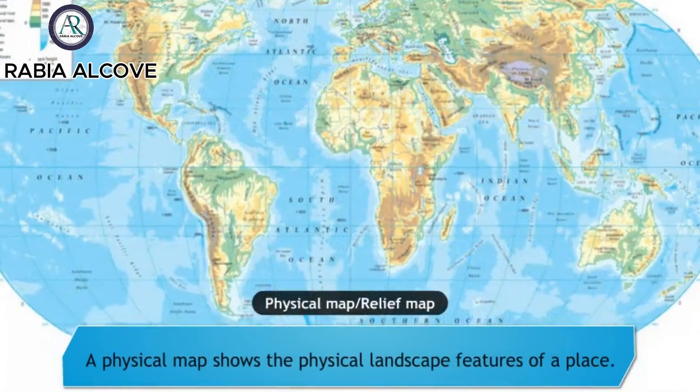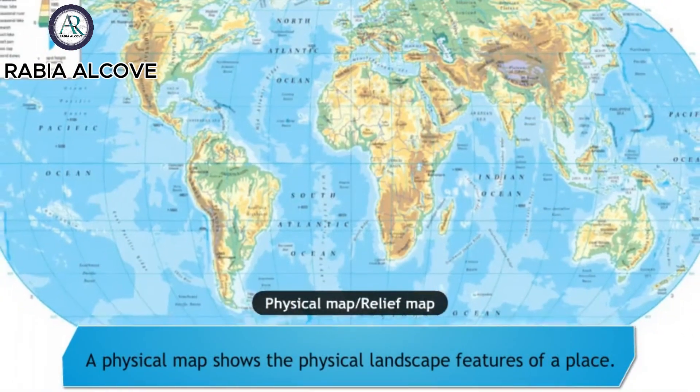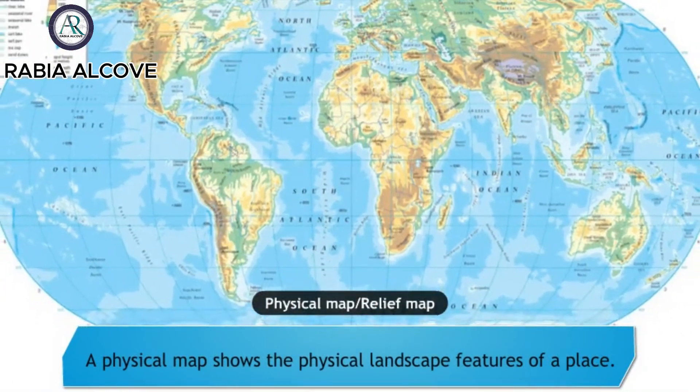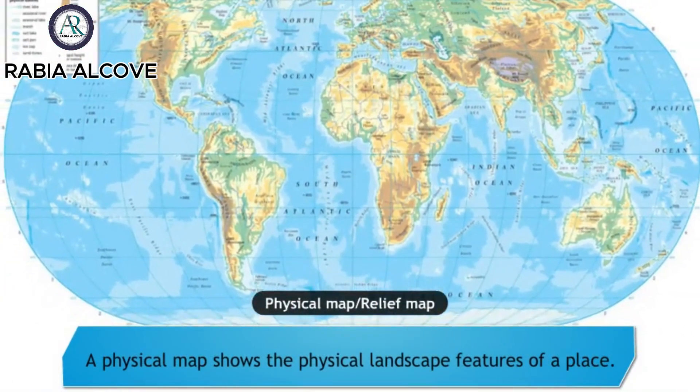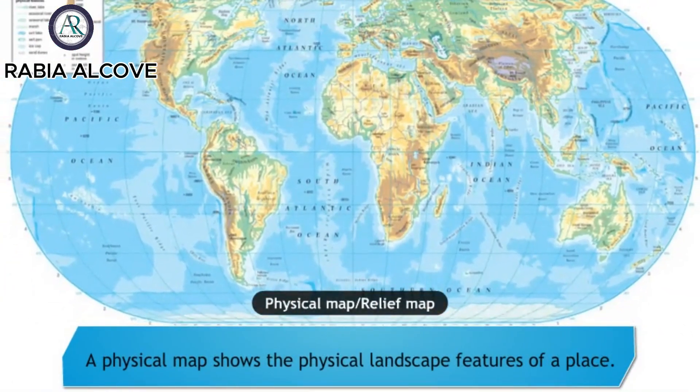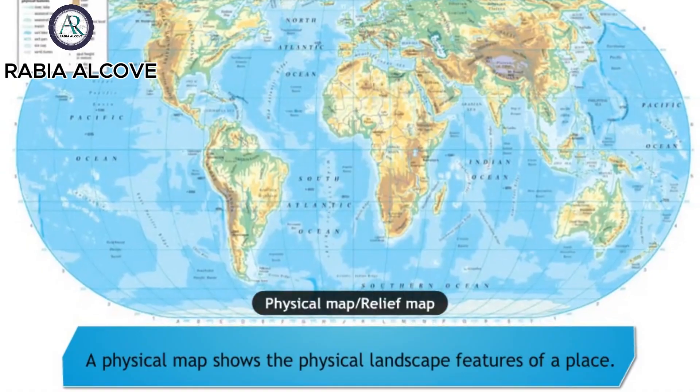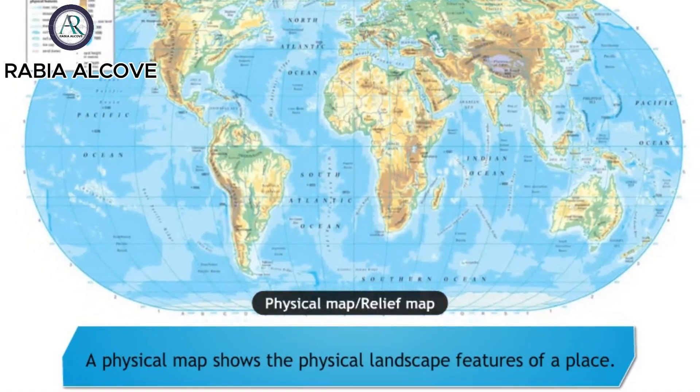A physical map shows the physical landscape features of a place. They show things like mountains, rivers, lakes and oceans.